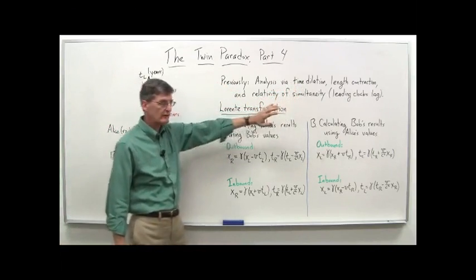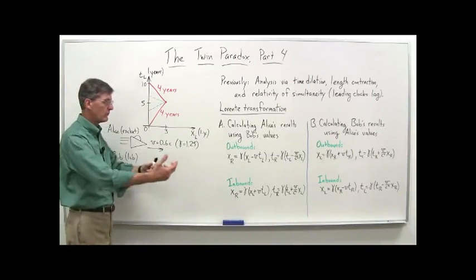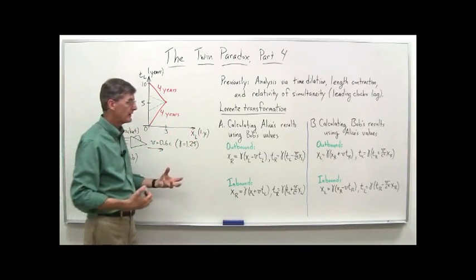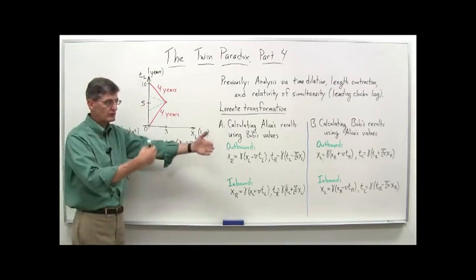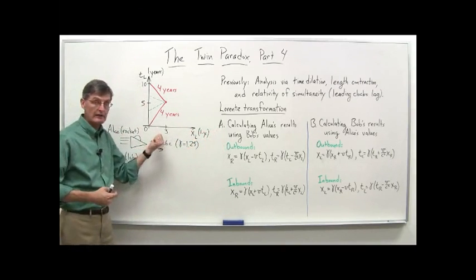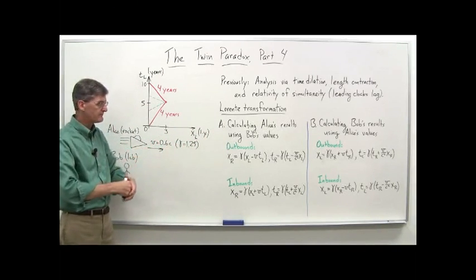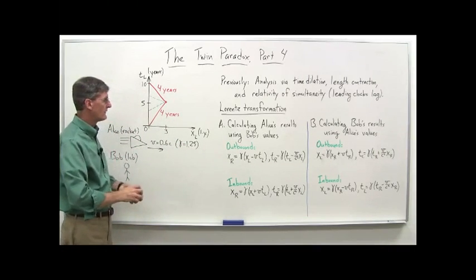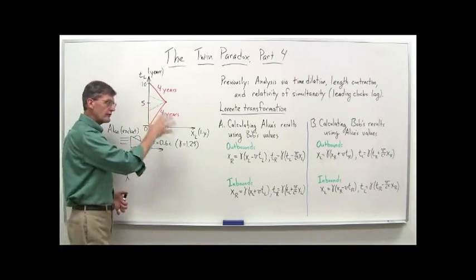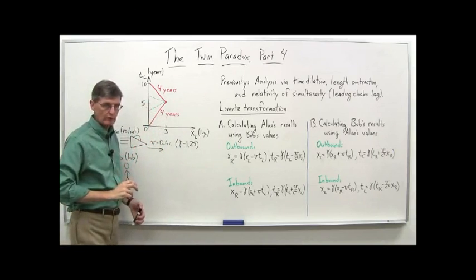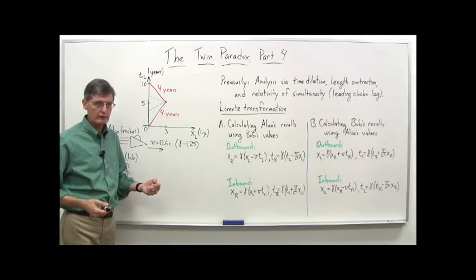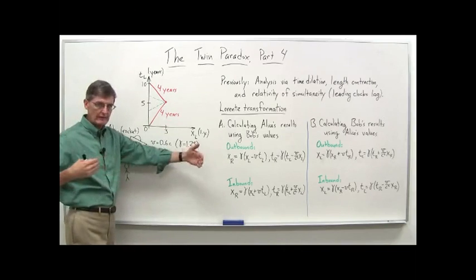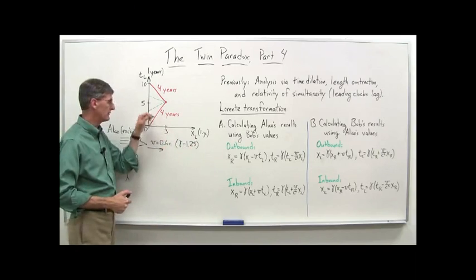We did Alice's analysis where she sees Bob essentially going away, the star coming toward her, and then back again. It was a little more complicated — we had to use not only time dilation but length contraction, because she sees the distance to the star not as three light years but a contracted distance. Once we did that, we got the correct number of years ticking off on her clock: four years. Though Alice also saw Bob's clocks running more slowly, and the number we got for that was 3.2 years — four years on Alice's clocks divided by the gamma factor of 1.25.